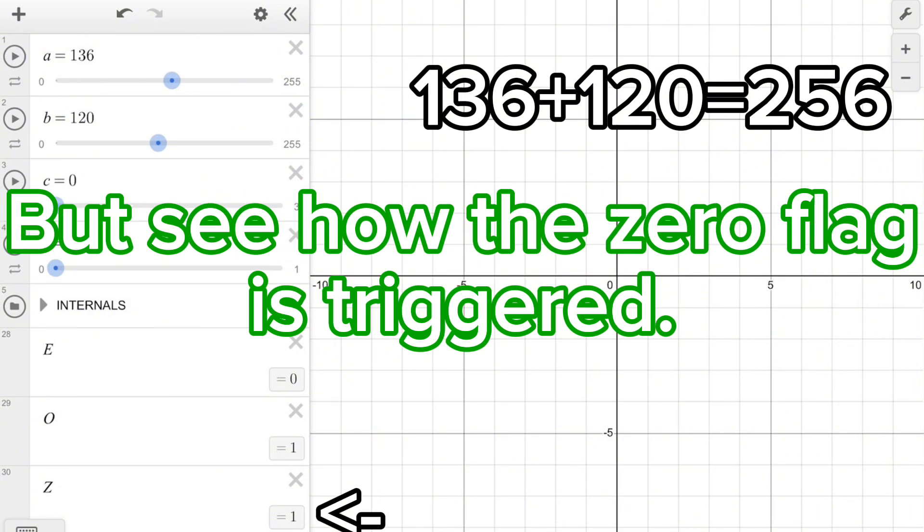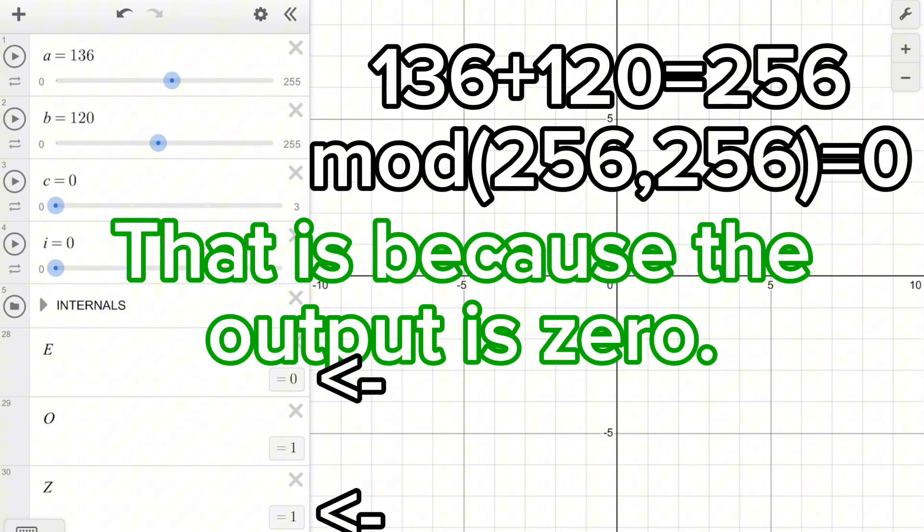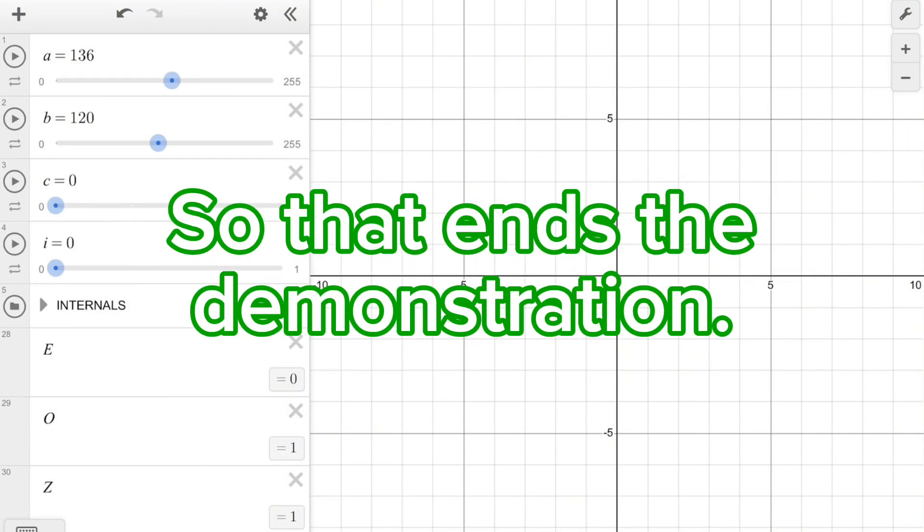Finally, 136 plus 120 equals 256. But see how the zero flag is triggered? That is because the output is zero. So that ends the demonstration.